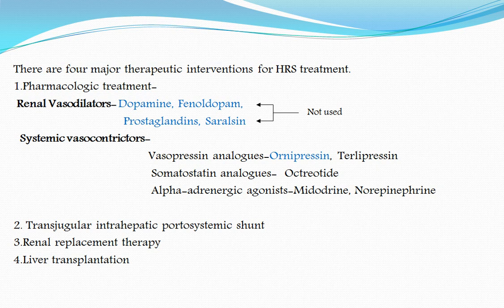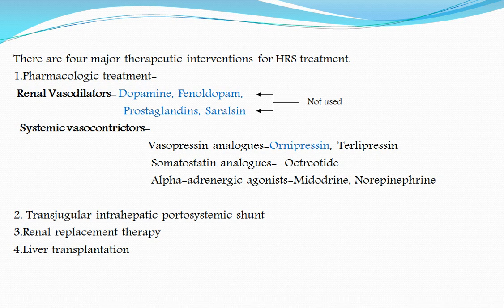There are four major therapeutic interventions for HRS. Pharmacological treatment includes renal vasodilators such as dopamine, fenoldopam, and prostaglandins — these are not used. Systemic vasoconstrictors include vasopressin analogues: ornipressin is not used, but terlipressin is proven by trials. Somatostatin analogues like octreotide are used; alpha-adrenergic agonist midodrine and norepinephrine are also used. TIPS, renal replacement therapy, and liver transplantation are the other major interventions.